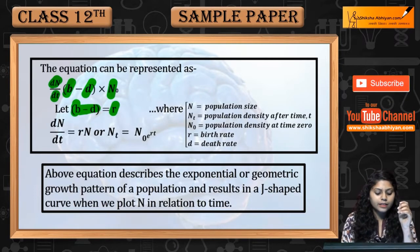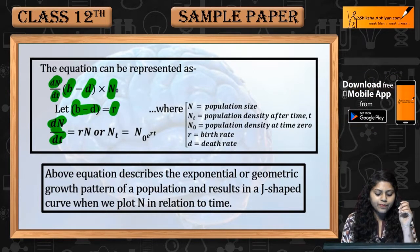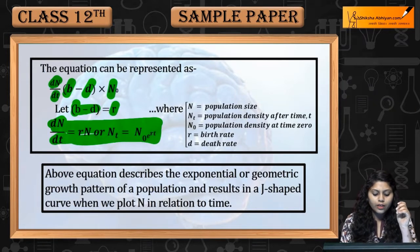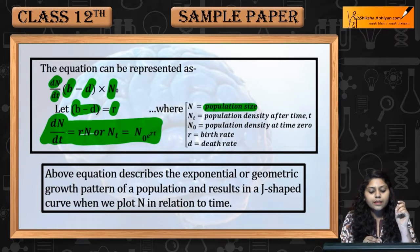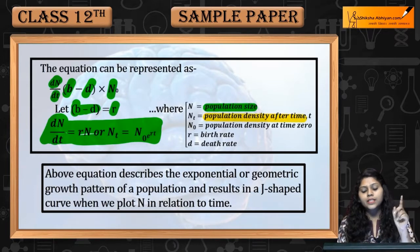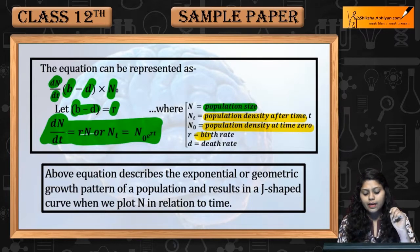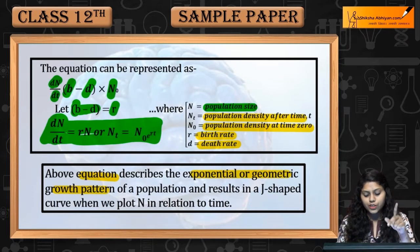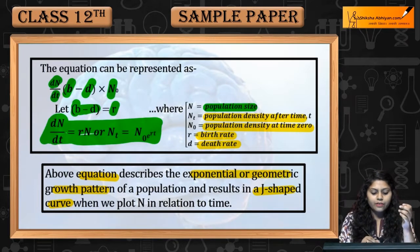b minus d is r, then the equation will be dN/dt = rN, or Nt = N₀ × e^(rt). Jahan pe N is population size, Nt is population density after time t, N₀ is at time zero, r is birth rate and d is death rate. Yeh equation describe karti hai the exponential or geometric growth pattern of a population.